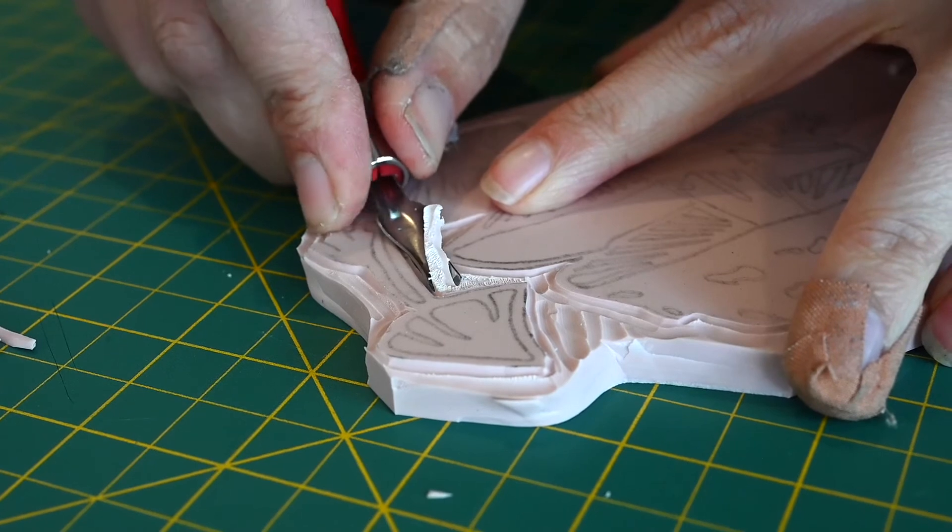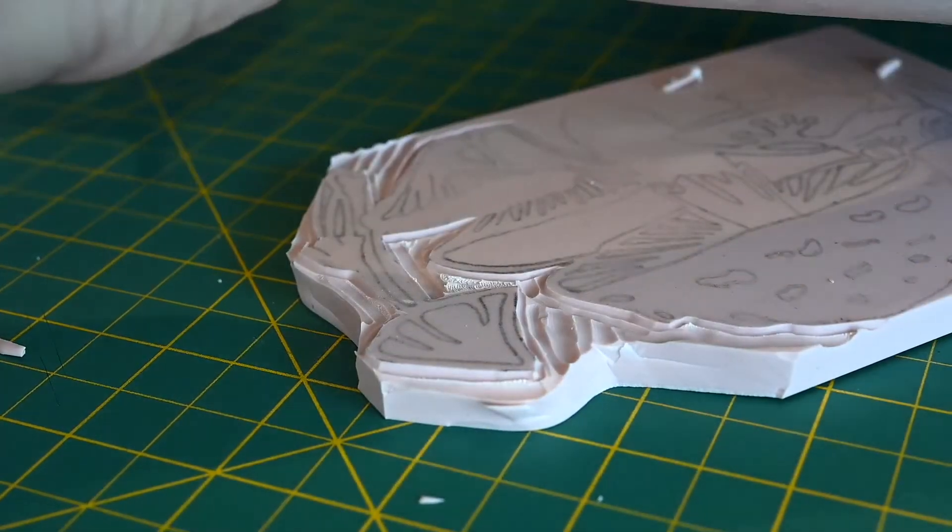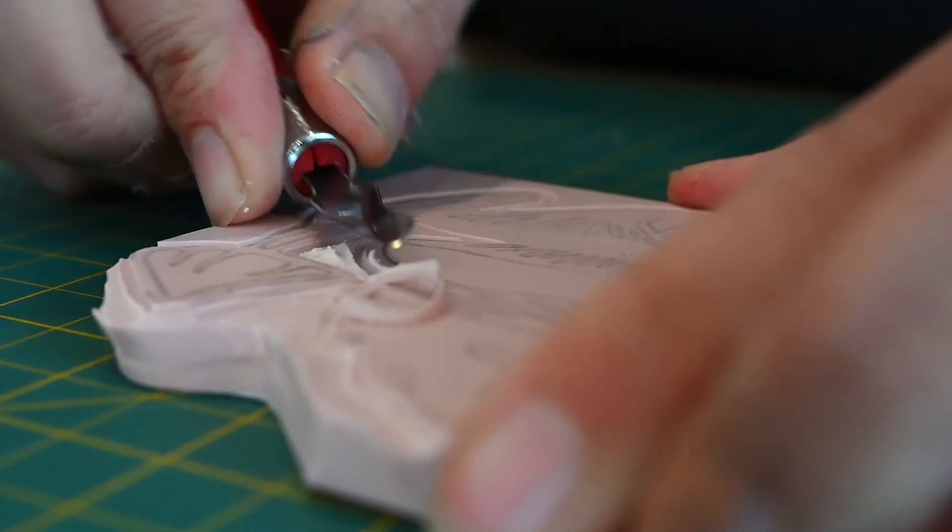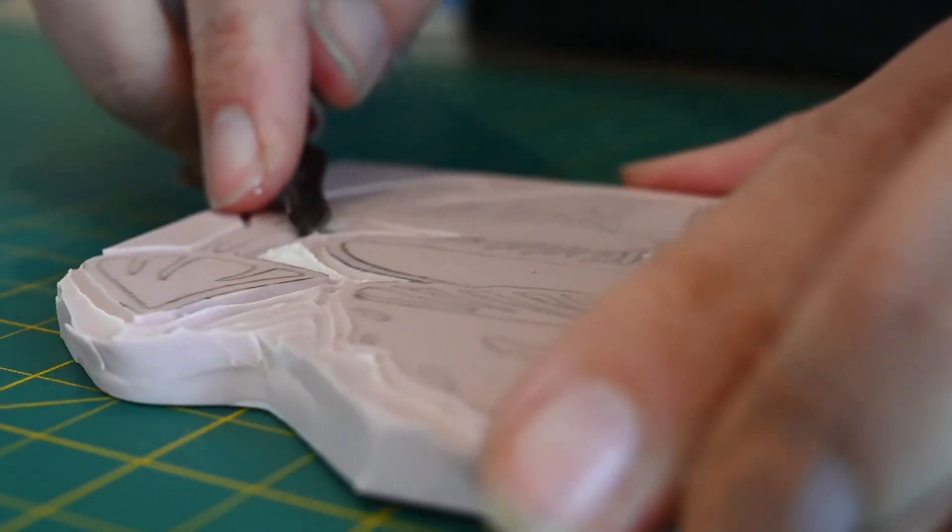Now it is time to bring your block to life by going inside your block and cutting away any detail. You can channel on the inside if needed and you'll be using a variety of all the blades.